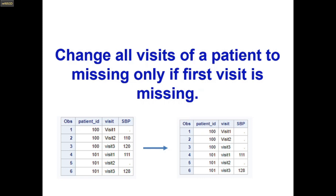We can understand this by looking at an example. In this example we have three variables: patient ID, visit, and SBP. We have two patient IDs — 100 and 101. Our goal is to make SBPs of a particular patient missing only when the first visit is missing. When SBP for patient 100 is missing for the first visit, we make all of them missing, whereas for patient 101 the first visit SBP is not missing, so those values stay as they are.